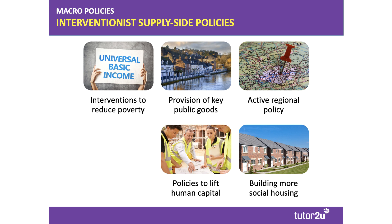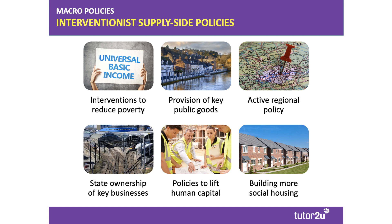There are many examples of where governments can intervene in the labor market. Perhaps they feel there's an under-provision of training or not enough money going into vocational education, so policies to lift human capital and upskill the labor force — including in STEM subjects — are part of an interventionist approach. The government may also decide to transfer some businesses out of the private sector into the state sector through nationalization. Quite a few privately run train operating companies have had their franchises removed and moved back into state ownership.